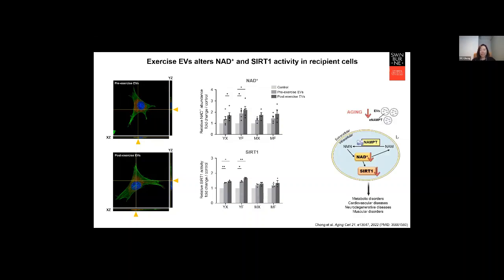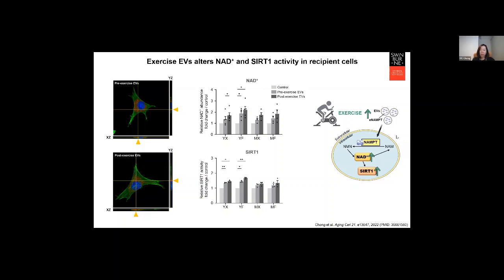Decline in E-NAMPT and the subsequent decrease in NAD production can be an issue during aging, triggering multiple age-associated diseases including metabolic disorders and neurodegenerative diseases. Our findings suggest a pathway for the systemic delivery of E-NAMPT through EVs released during exercise to maintain or offset the age-related decline in tissue NAD levels. Most importantly, we think exercise has an important role in improving health during aging, partly through the release of EVs containing essential factors.